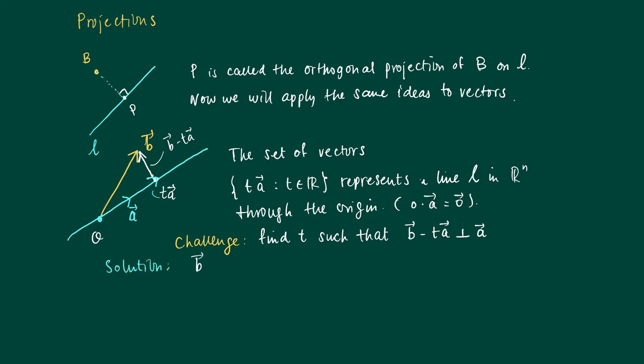Well, we solve this question by looking at the relation B minus TA, which is no more than saying that B minus TA, the dot product with the vector A should be 0.